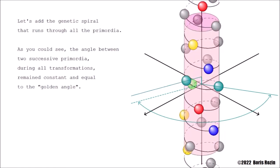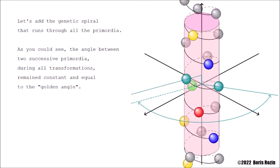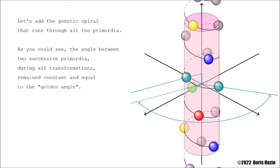As you could see, the angle between two successive primordia during all transformations remain constant and equal to the golden angle.